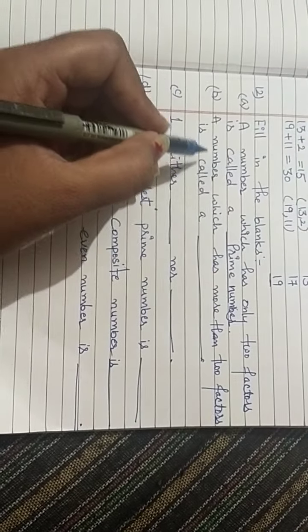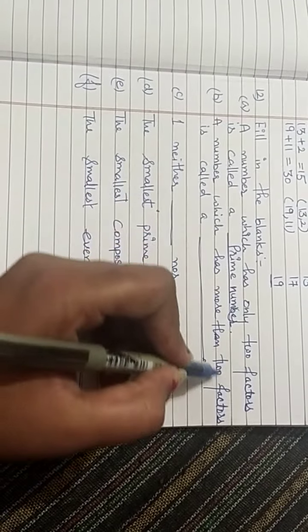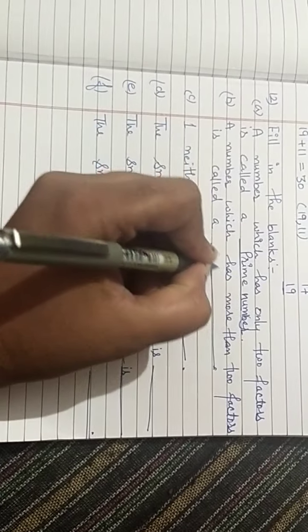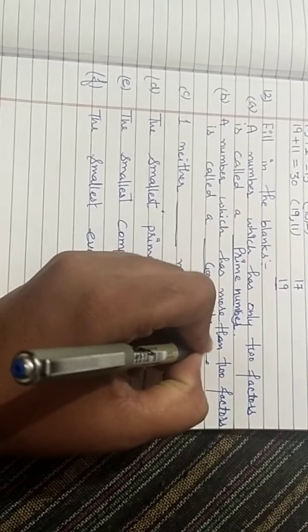Second is B part. A number which has more than 2 factors is called a composite number.